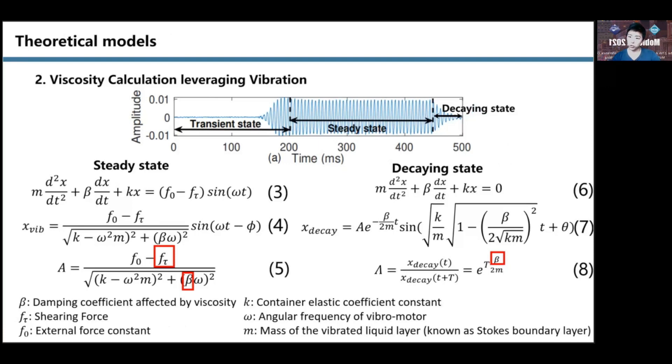We need to solve unknown parameters in the model, such as the damping coefficient. When the external force induced by the motor stops, the system turns to a decaying state. The vibration of the liquid gradually decays and then stops due to resistance caused by the damping coefficient. Therefore, this part of the signal can solve the damping coefficient.